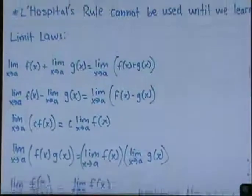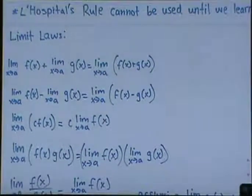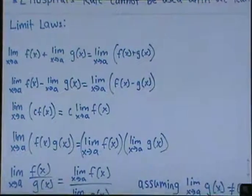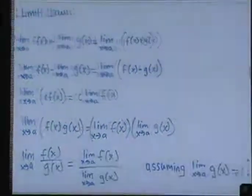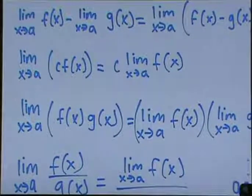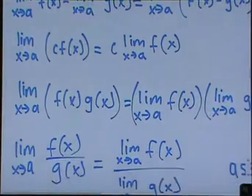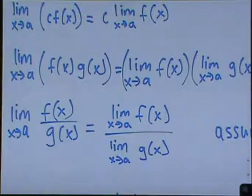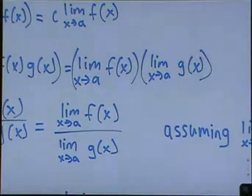Here are the limit laws. The limit as x approaches a of f(x) plus the limit as x approaches a of g(x) equals the limit as x approaches a of f(x) + g(x). The same applies to subtraction. For multiplication by a coefficient, the limit as x approaches a of c·f(x) equals c times the limit as x approaches a of f(x). And the limit as x approaches a of f(x)·g(x) equals the limit of f(x) times the limit of g(x).